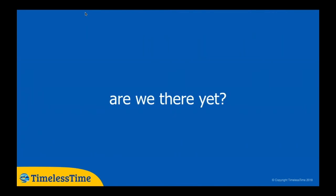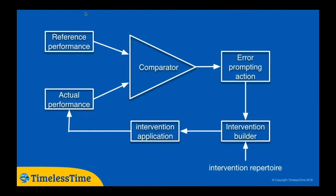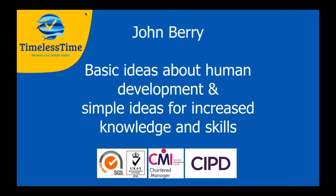How do we know if it's working? The feedback control loop: are we getting the performance, are we getting those outcomes? You compare the actual performance to the reference performance. If they match, do nothing. If there's an error — if the actual performance is not what you want — that prompts you to act: go to your training repertoire, build a training intervention, deliver it, and then see whether or not it works. We're constantly feeding back and testing. So there we are — thank you very much for listening, and I'll hand back to Sue.